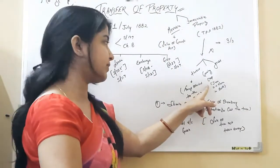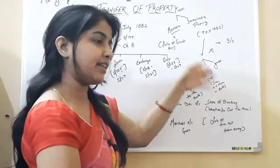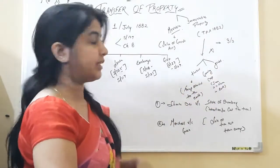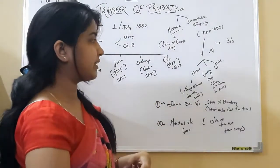Likewise in growing crops, a similar thing is there. Grass, till it is attached to the earth, it is immovable property. After detaching that grass, it becomes a movable property.